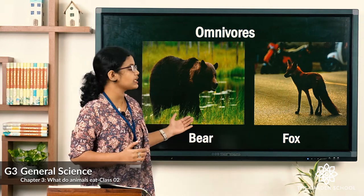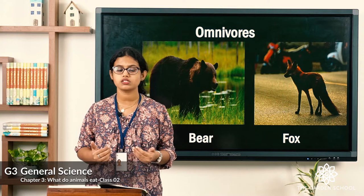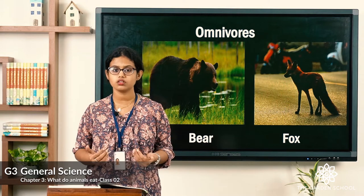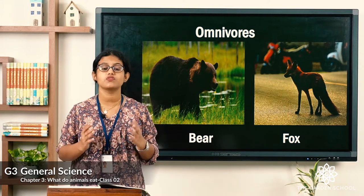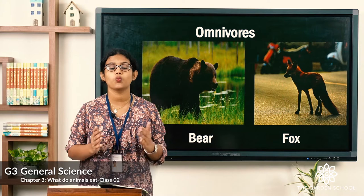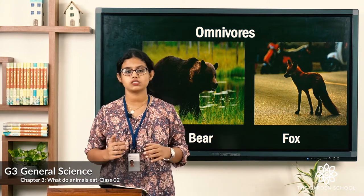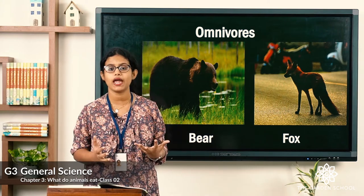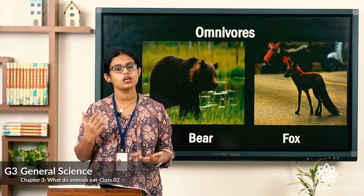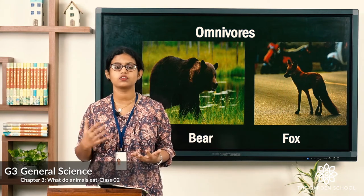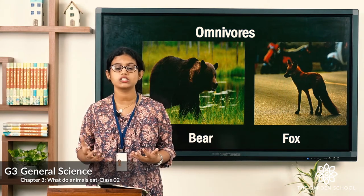You can see the examples here: bear, fox, peacock, and sparrow — all these are examples of animals which eat both plants and animals. What about bear? What does it eat? It eats plants like fruits, and even it eats fish.